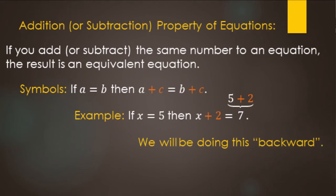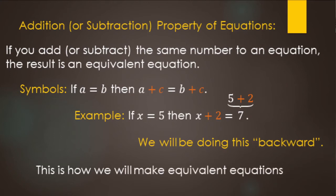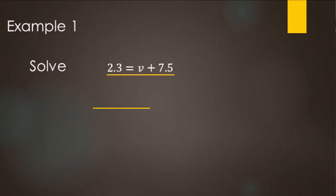We're basically going to be doing this backwards, going from bigger equations to smaller ones. This is how we make equivalent equations — ones that have the same solution, the same value for the variable. Let's look at this example: 2.3 equals v plus 7.5. This v is a variable — a value we don't know yet.